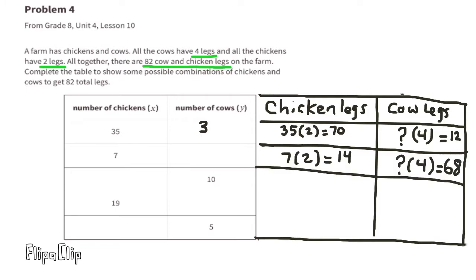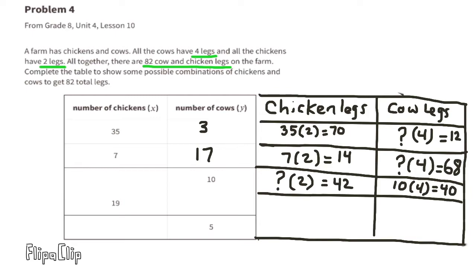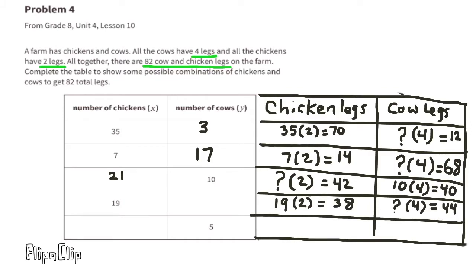If there were only 7 chickens: 7 times 2 equals 14, and 82 minus 14 equals 68. 68 legs divided by 4 legs equals 17. So if there were 7 chickens, there would be 17 cows. If there were 10 cows: 10 times 4 equals 40 legs, and 82 minus 40 equals 42 legs. 42 divided by 2 equals 21. So if there were 10 cows, there would be 21 chickens. If there were 19 chickens, there would be 38 legs, and 82 minus 38 equals 44 legs. 44 divided by 4 equals 11. So if there were 19 chickens, there would be 11 cows.